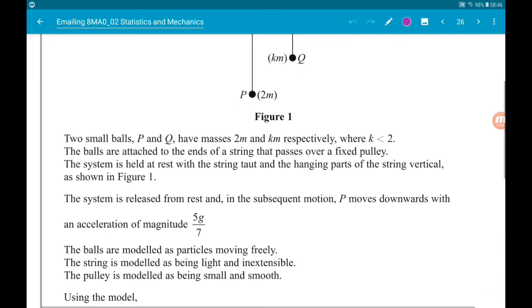Now we're told quite a bit of information. Two small balls, P and Q, have mass of 2M and KM respectively where K is less than 2. So ball P is heavier than ball Q. The balls are attached to the ends of a string that passes over a fixed pulley. The system is held at rest with the string taut and the hanging parts of the string vertical as shown in figure 1.